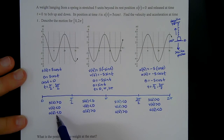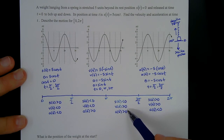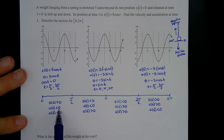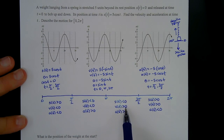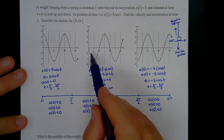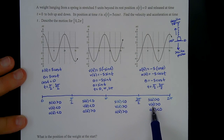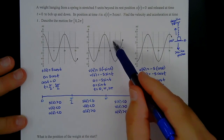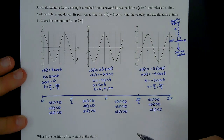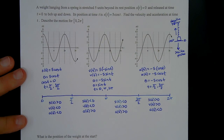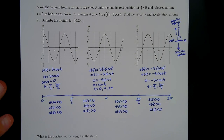This tells us: speeding up, slowing down, speeding up, slowing down. Negative velocity means it's moving up, so from 0 to π the weight is moving up the whole time. Then from π to 2π the velocity is positive, meaning it's moving down. So it goes all the way up and then all the way back down.